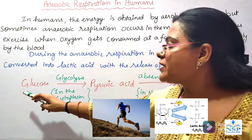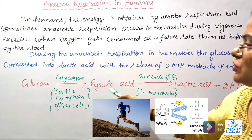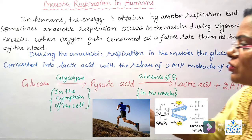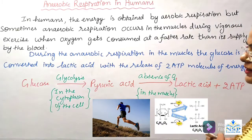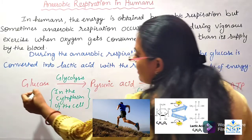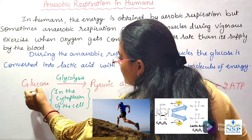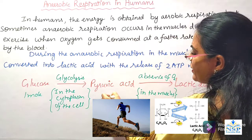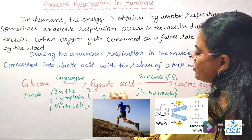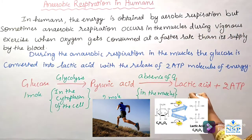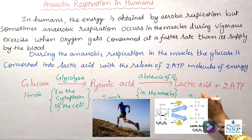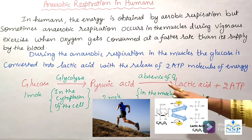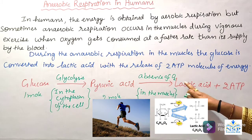First step: glucose changes into pyruvic acid. This process is called glycolysis. In this process, one molecule of glucose changes into 2 molecules of pyruvic acid, and 2 ATP energy is released, in the absence of oxygen.